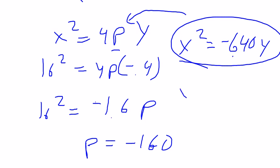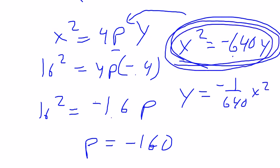The back of the book sets it equal to y, so it divides both of these sides by negative 640. So they get negative 1, 640, x squared. I don't mind either answer. This is how we've been doing it. This is a standard form. This is just y equals. They're both the exact same equation.